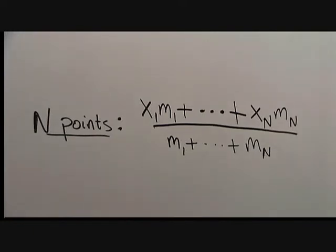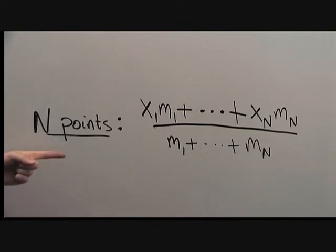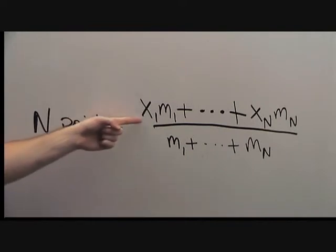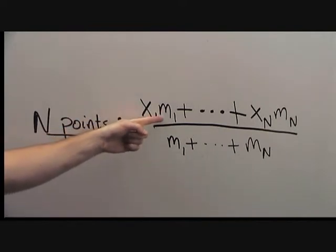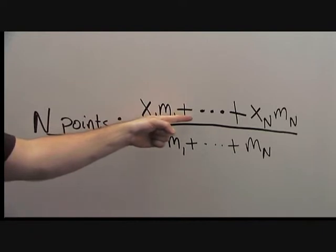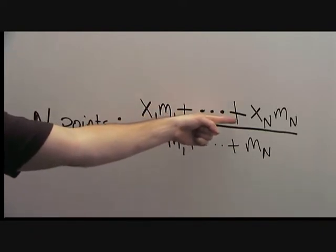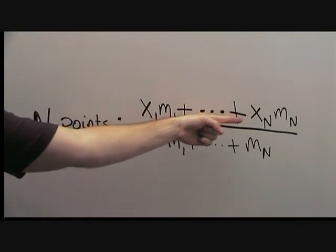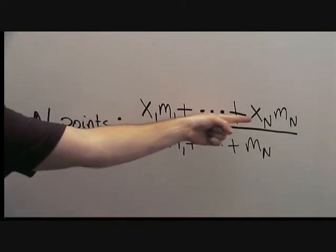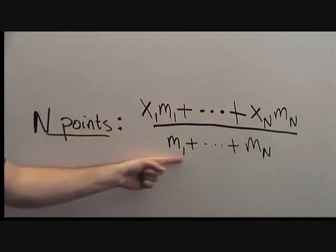We will need to calculate the center of mass for many more than just two or three points. For a generic N points on a line, the center of mass is x₁·m₁ + x₂·m₂ + … + xₙ·mₙ, all divided by the total mass, which is simply adding up all the mass involved.